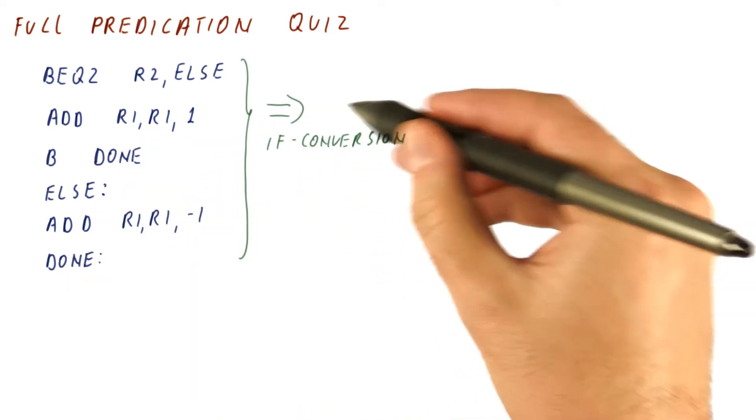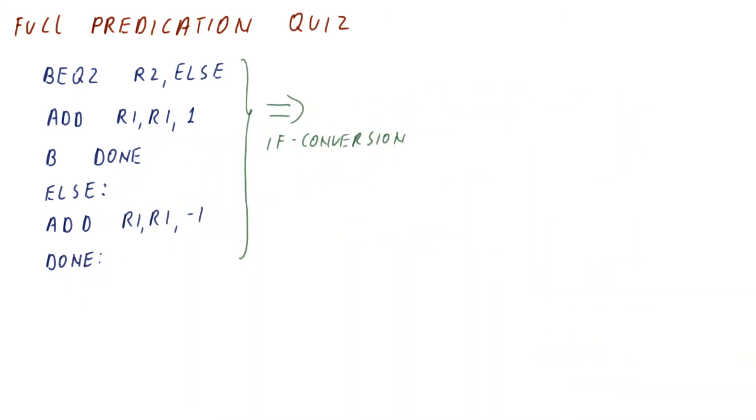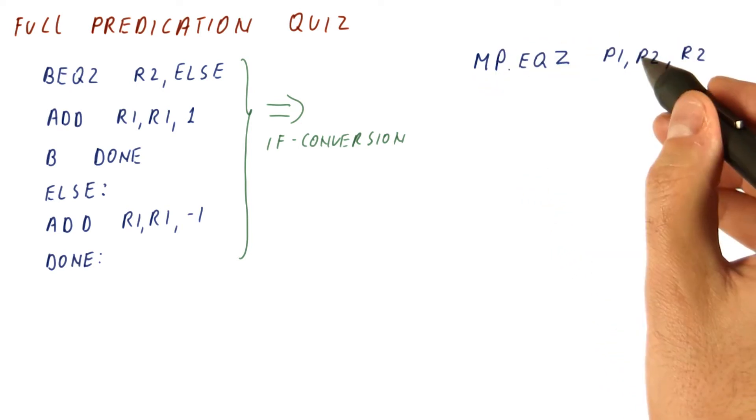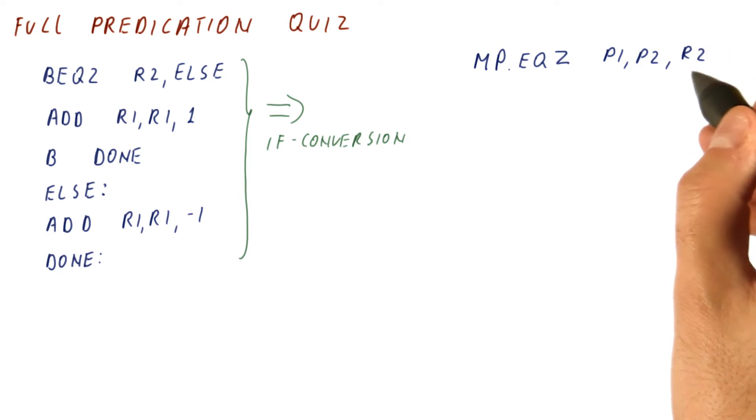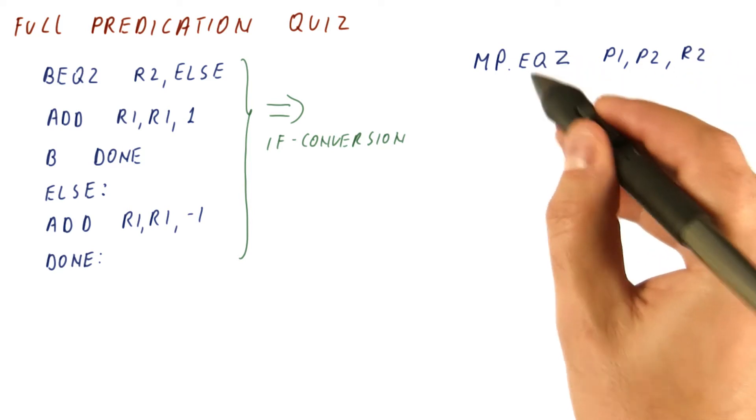So after if conversion with full predication, we get this. First, we set predicates p1 and p2 according to whether r2 is equal to 0.